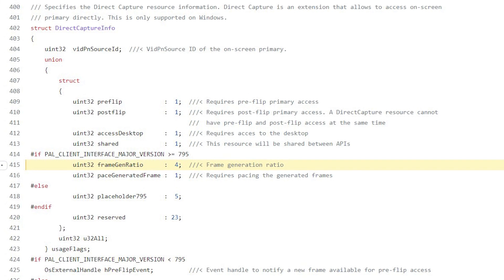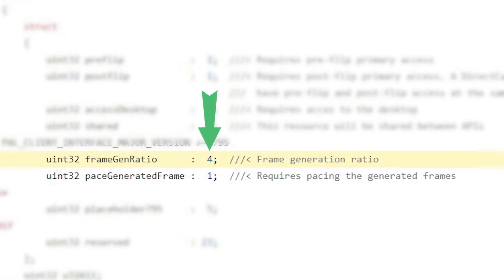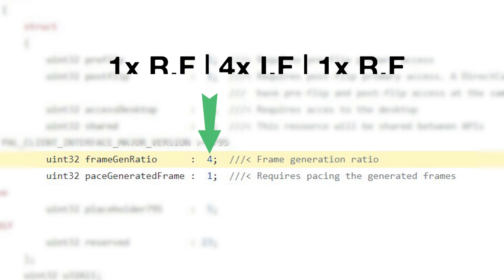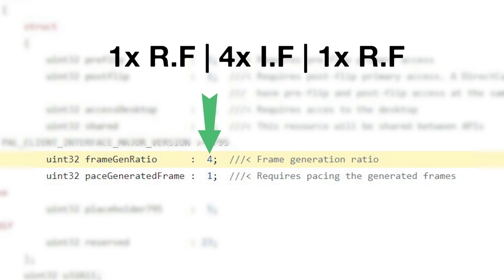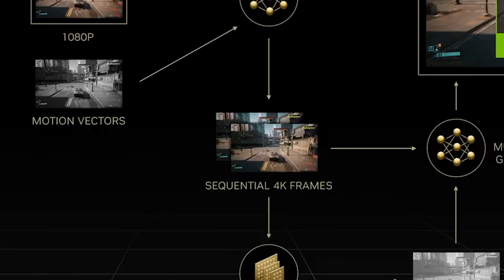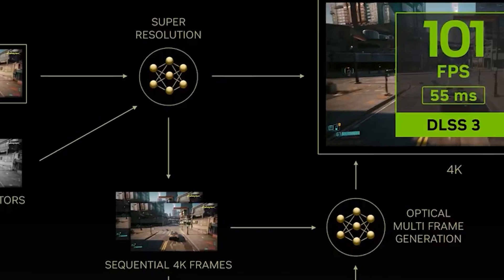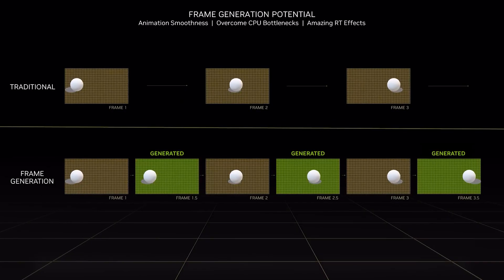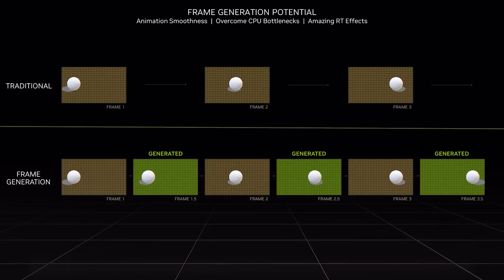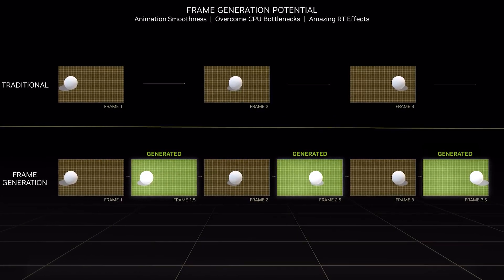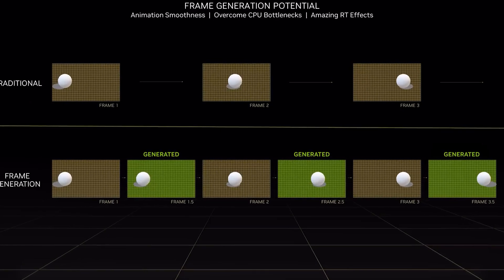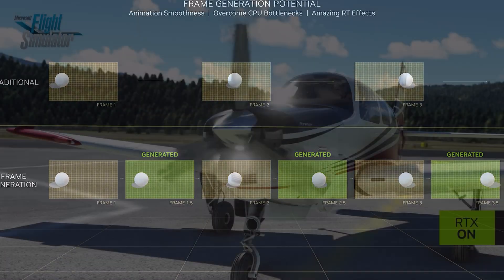According to the user, the frame generation ratio is 4, which implies that FSR 3 is going to create up to 4 interpolated frames for every real frame in games. This is very different from NVIDIA's DLSS 3 frame generation, which can only produce one interpolated frame — aka a fake frame — for each real frame.